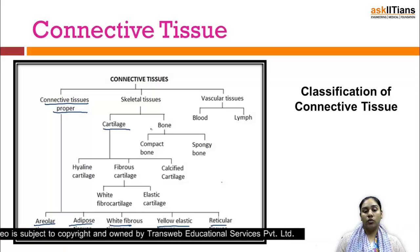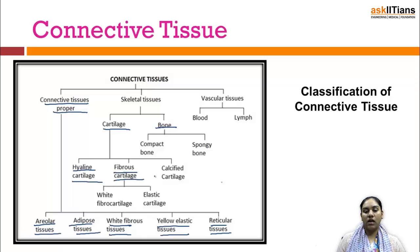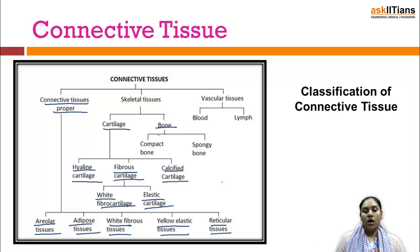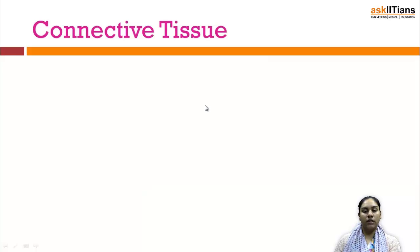Skeletal tissues include cartilage and bone. Cartilage includes hyaline cartilage, fibrous cartilage, and calcified cartilage. Fibrous cartilage is divided into two types: white fibrocartilage and elastic cartilage. Bone is also of two types: compact bone and spongy bone. The last type of connective tissue is vascular tissue — blood and lymph.